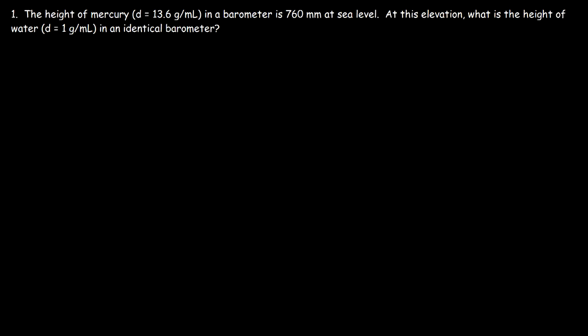Consider this problem. The height of mercury in a barometer is 760 millimeters at sea level. At this elevation, what is the height of water in an identical barometer? We're given the density of mercury, which is 13.6 grams per milliliter, and the density of water, which is 1 gram per milliliter. Note that 1 milliliter is the same as 1 cubic centimeter, so the density of mercury can also be expressed as 13.6 grams per cubic centimeter.